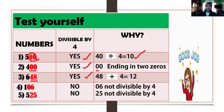How about number 4? We have 106. The last two digits is not divisible by 4. So it is not divisible by 4. How about number 5? 525. Is 25 divisible by 4? Of course no. When you divide it by 4, there will be a remainder. So it is not divisible by 4. You're correct.